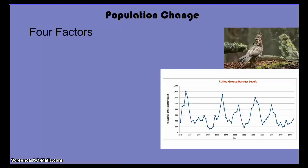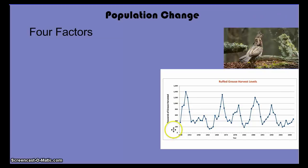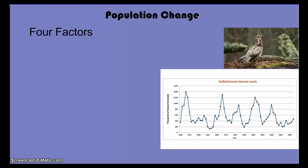Population changes as a result of four different factors. Here is a graph showing population change for the ruffed grouse. This is the ruffed grouse population from 1948 to 2008 — actually the harvest levels, the number killed by hunters — but it roughly approximates how many birds there are in the environment, because the higher the number of birds, the more that would be killed.